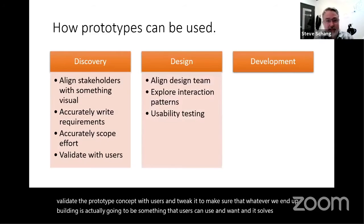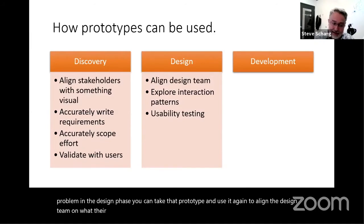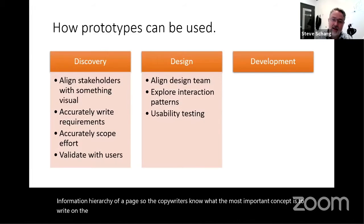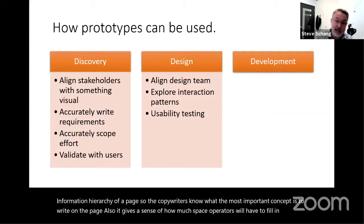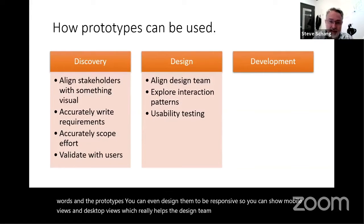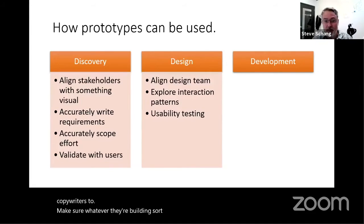In the design phase, you can take that prototype and use it to align the design team on what they're building and writing. I've seen great examples where prototypes lay out the information hierarchy of a page, so copywriters know what the most important concept is to write. It also gives a sense of how much space copywriters have to fill with words. You can even design prototypes to be responsive, showing mobile views and desktop views, which really helps the visual designers and copywriters ensure whatever they're building fits the vision.